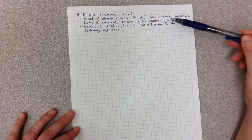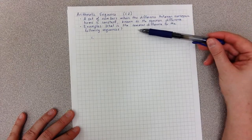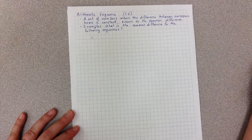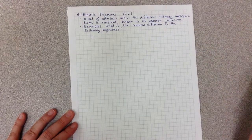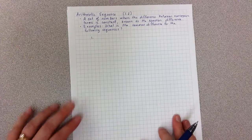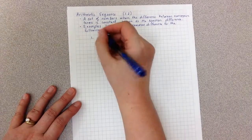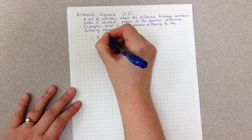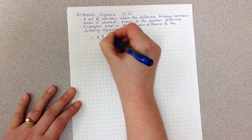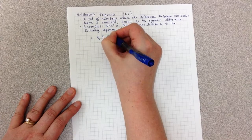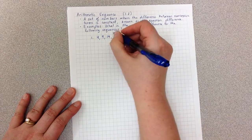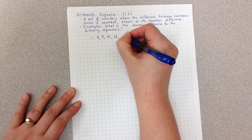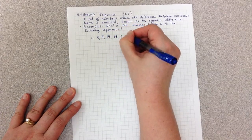The examples — we're going to answer the question: what is the common difference for the following sequences? So our first example, we have the sequence 4, 9, 14, 19, 25...